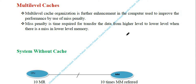We were discussing cache memory — by using cache memory we have enhanced the performance of the system. For further enhancement we need multi-level caches. Multi-level cache organization is used to improve performance by reducing miss penalty. Miss penalty is the time required to transfer data from a higher level to a lower level when there is a miss in the lower level.